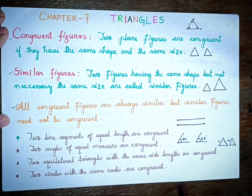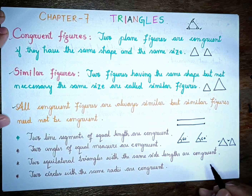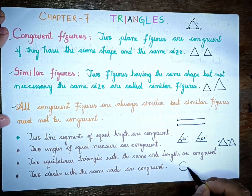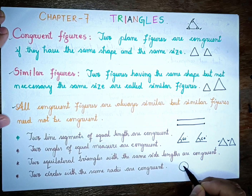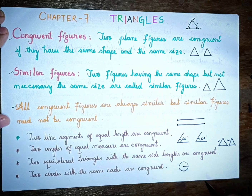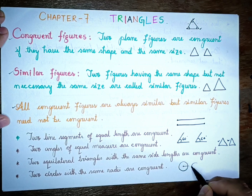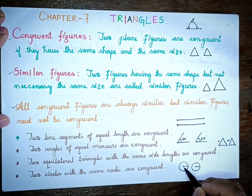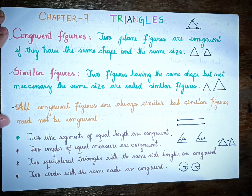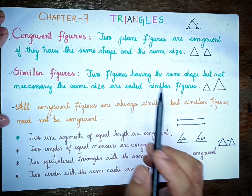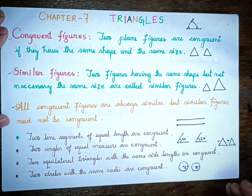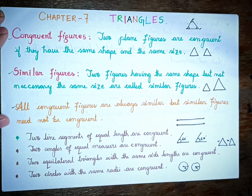Two circles with the same radii are congruent. The circle's radius determines its size. If the centre of the circle has the same radius, then the circles are the same size and are congruent.